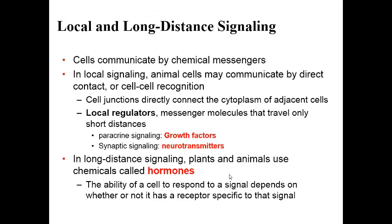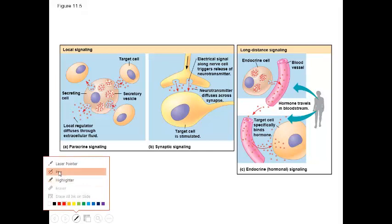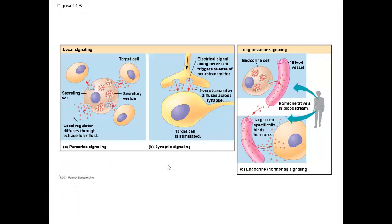There are two types of signaling that can take place: local signaling and long-distance signaling. In local signaling, information is sent across a very small distance. Here you see two examples of local signaling: paracrine signaling and synaptic signaling.